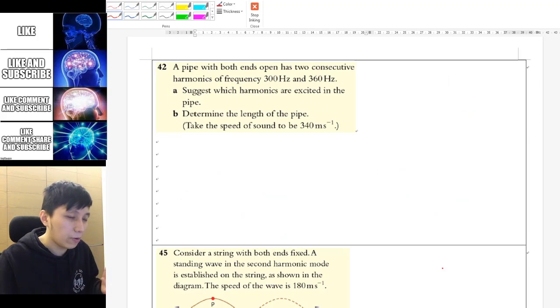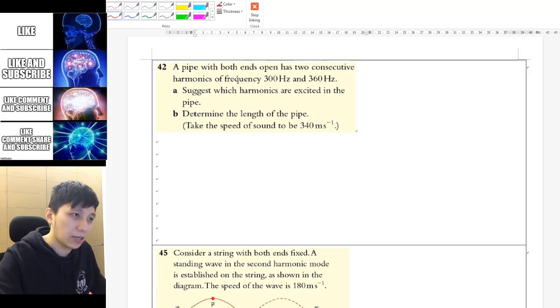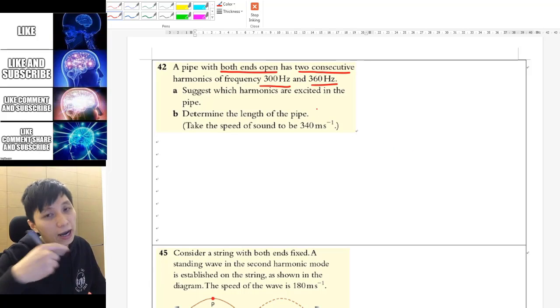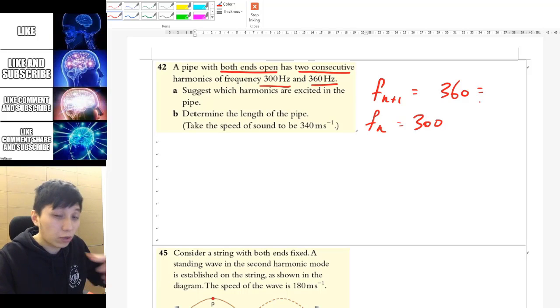Question 42. This is a simple but interesting question. And you can express in a pretty elegant way mathematically. So it's asking you in a both open-end system for two consecutive harmonics. You have this and this frequency. So how you can express this in mathematics is you can write f_(n+1), the n+1th harmonic is going to be this, this much of hertz. And then f_n, the nth harmonic is going to be 300 hertz.